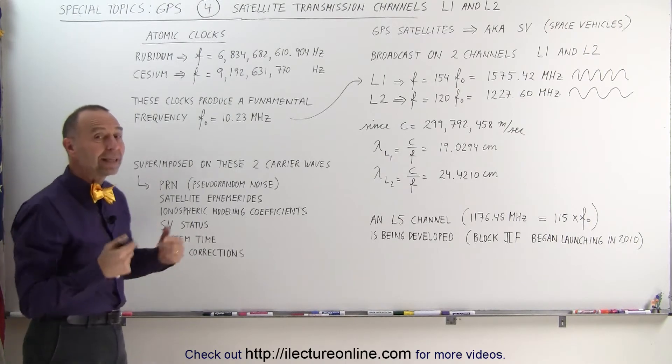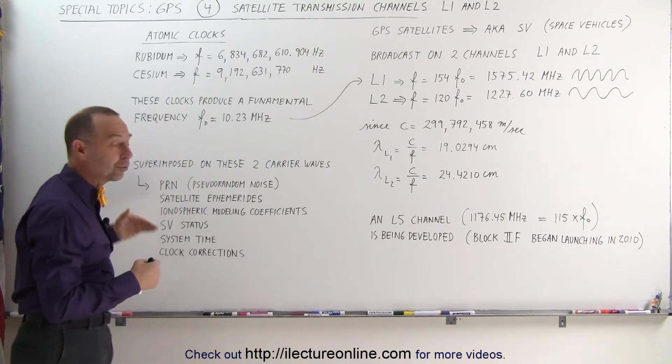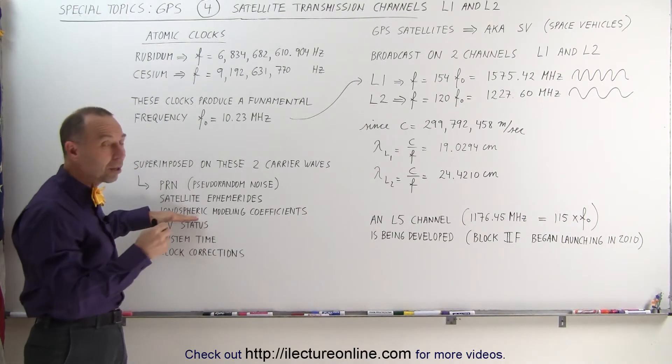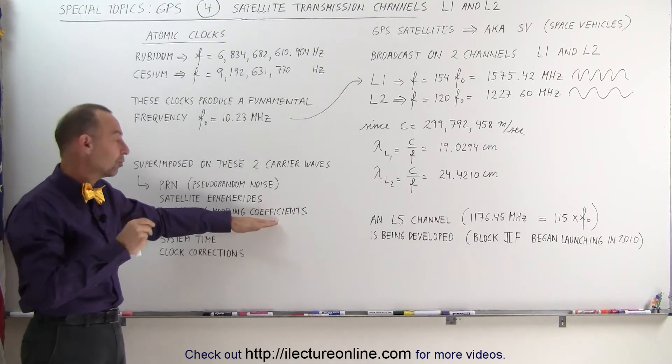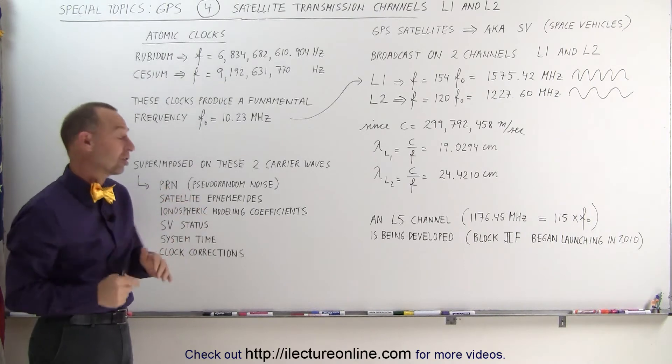The biggest problem with getting satellite signals in from space is that it has to go through the ionosphere, so we need to have ionospheric corrections. We have ionospheric modeling, and then we have to give coefficients and update those models for the specific conditions of the ionosphere, which changes on a continual basis.